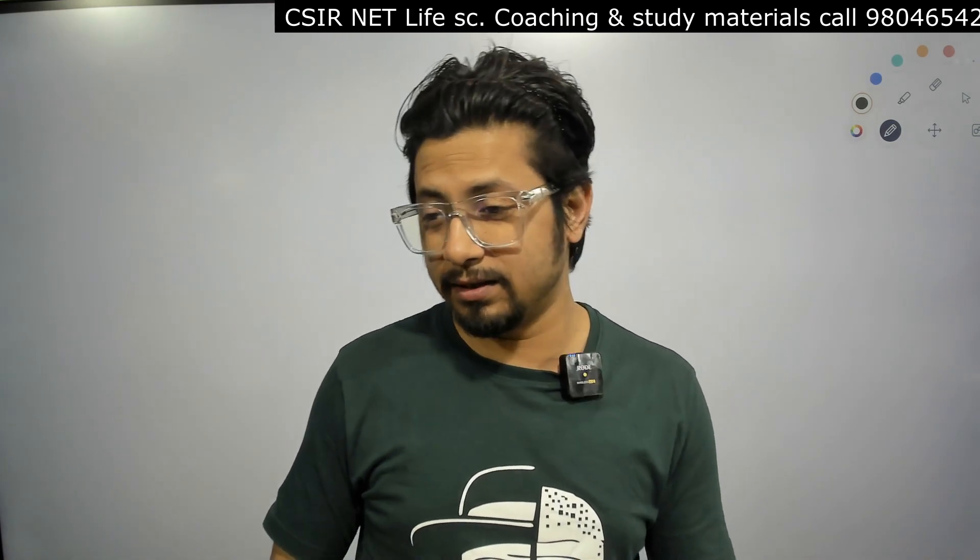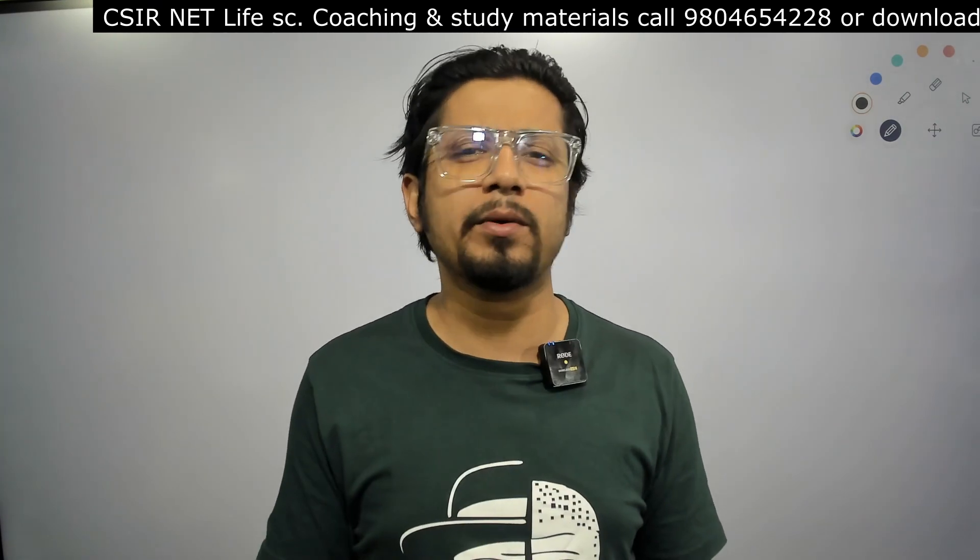You need to know what phytochromes and cryptochromes do. You also need to know how exactly the phytochromes interchange between Pr and Pfr form, what are the different light intensities these photoreceptors respond to, and how exactly the response is done. There will be so many questions in part C as well as in part B in the CSNA examination from this topic.